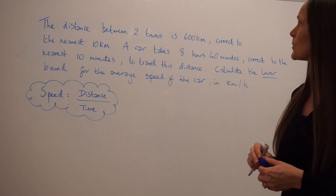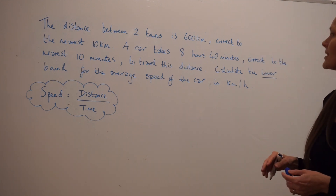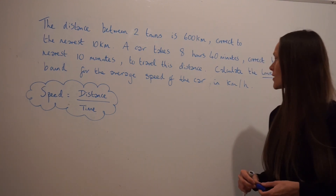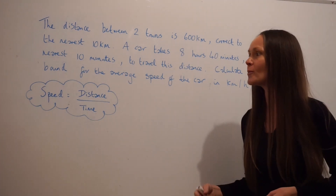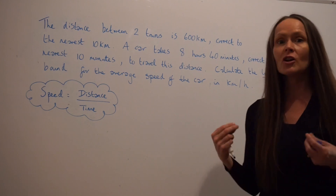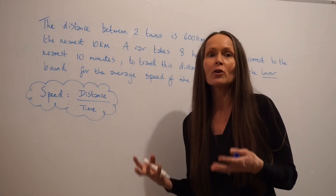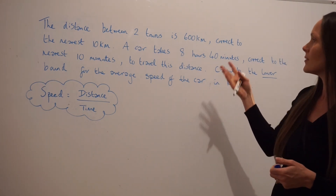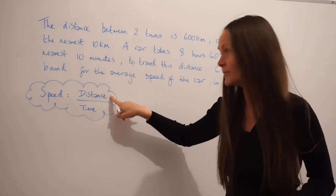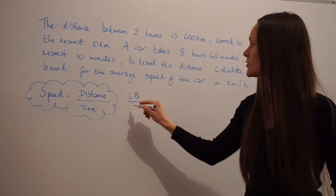In this question it says the distance between two towns is 600 kilometres correct to the nearest 10 kilometres. A car takes 8 hours 40 minutes correct to the nearest 10 minutes to travel this distance. Calculate the lower bound for the average speed of the car in kilometres per hour. Again, the formula to calculate speed is distance divided by time. In this question we're working out the lower bound for the speed — that's the slowest possible speed of the car. So we need to take the smallest distance, i.e. the lower bound, and this time we need to take the upper bound for the time.